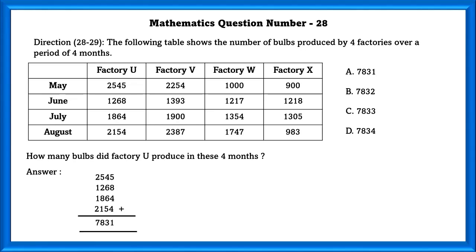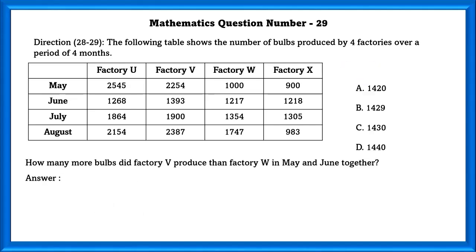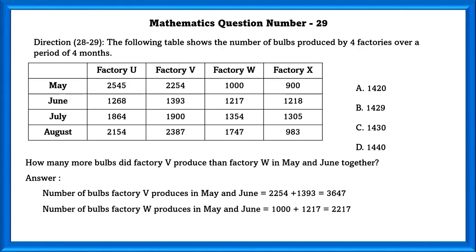How many more bulbs did factory V produce than factory Y in May and June together? Number of bulbs factory V produced in May and June is equal to 3,647. And for factory W we will get 2,217. In order to find how many more bulbs factory V produced than factory W, we have to subtract 3,647 and 2,217. If we do that we will get 1430. So factory V produced 1430 more bulbs than factory W.